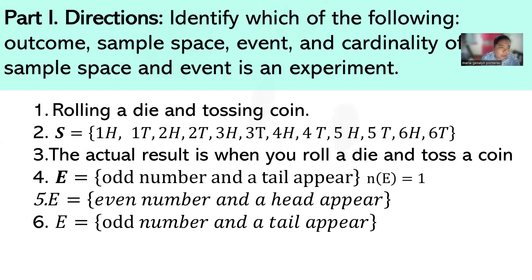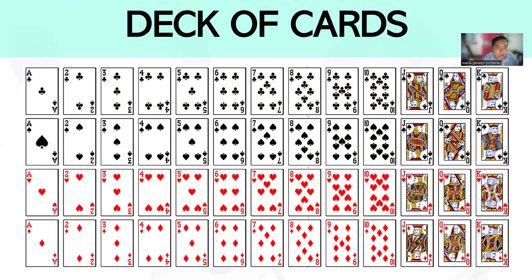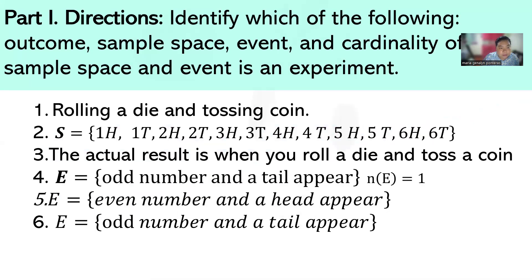Let's have our first example. Identify which of the following is an outcome, sample space, event, and cardinality of sample space and event. Number one: rolling a die and tossing a coin simultaneously — that is the experiment. Number two: the sample space contains one-head, one-tail, two-head, two-tail, three-head, three-tail, four-head, four-tail, five-head, five-tail, six-head, six-tail — these are all possible outcomes. How many elements? We have 12.